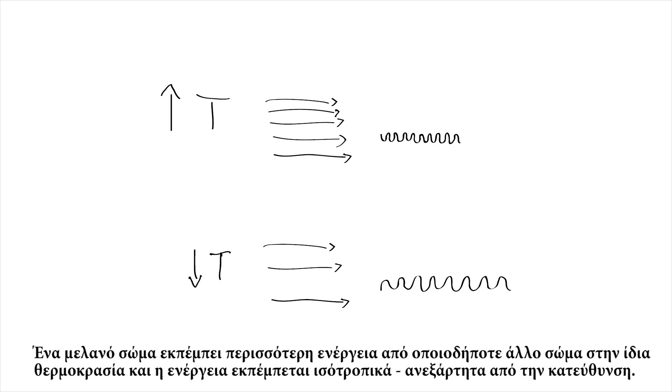A black body emits more energy than any other body at the same temperature and the energy is emitted isotropically, independent of direction.